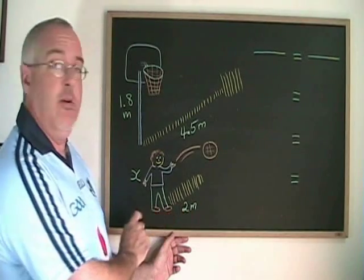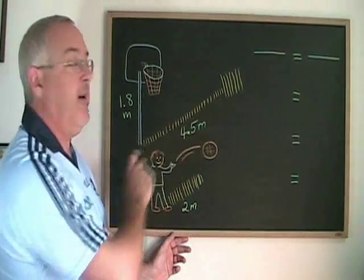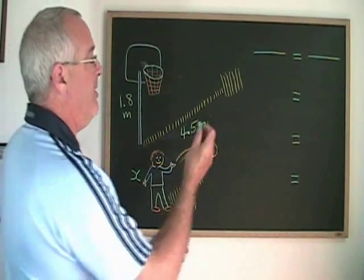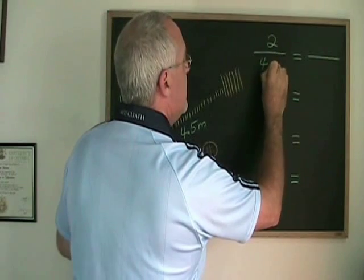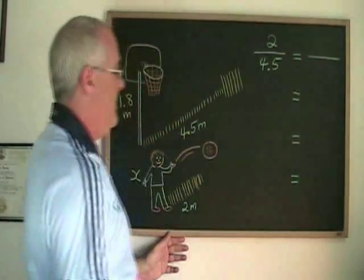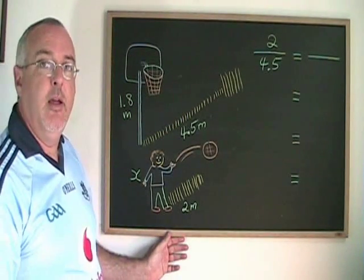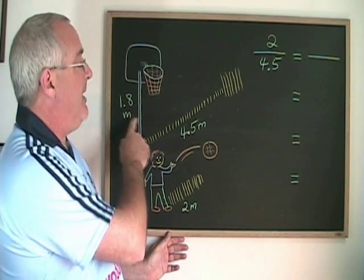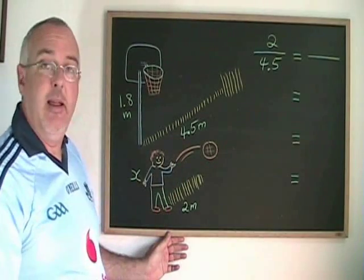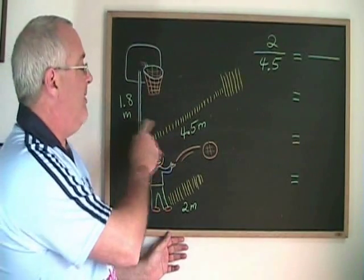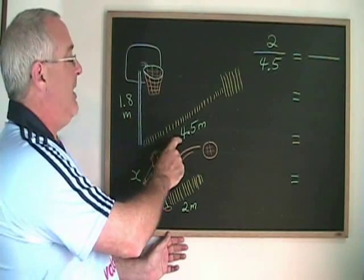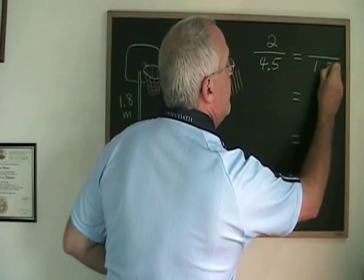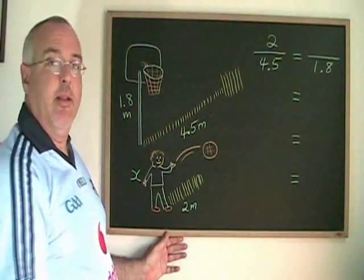The 2 meter shadow must be similar to the 4.5 meter shadow, so I will put those two numbers together with the smaller one on top. The 1.8 meter height of the basketball hoop must be kept together with the 4.5 meter length of the shadow because they are part of the same triangle. To keep these two numbers together means I have to put my 1.8 on the bottom. My x goes in the last remaining spot.